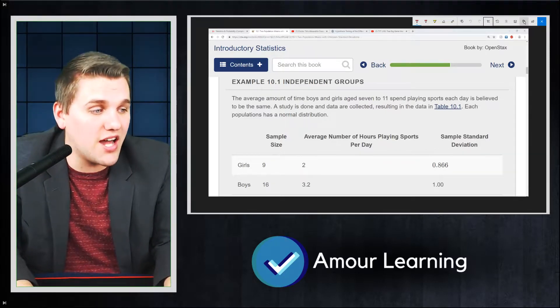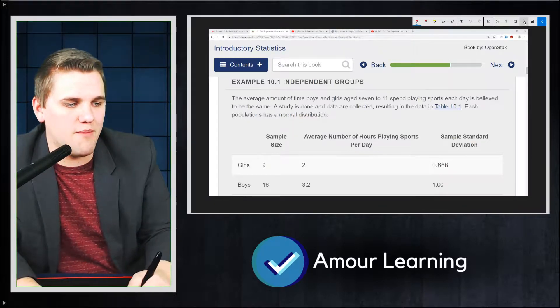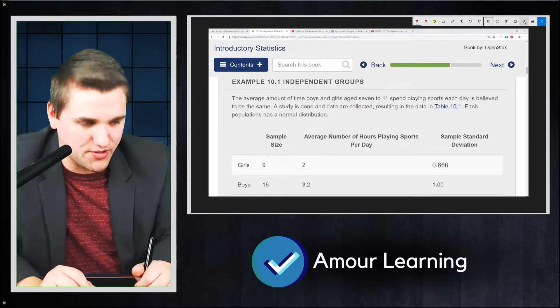A study is done and data are collected, resulting in the data in this table here. So if you notice, you have two samples. You have a sample of girls and you have a sample of boys. Two independent samples of each other.